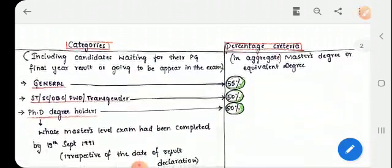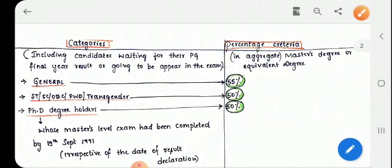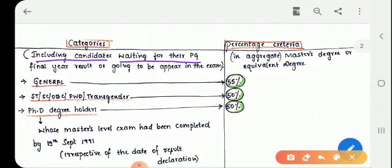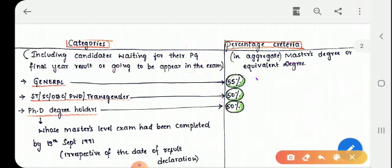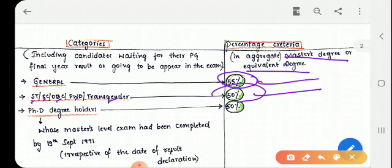Let's know about the percentage criteria that you should possess in your PG level, PG degree. This includes candidates waiting for their PG final year result or going to appear in the exam. That means this percentage can be for first year if your second year PG examination, master's examination is still to be appeared. So only first year is taken, or if you have completed PG degree the average percentage is taken.